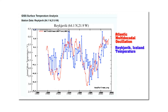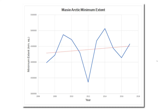The AMO may have peaked about 10 years ago and appears to be now on a downward trend. If so, we would expect the temperatures in Reykjavik would decline with it. And not surprisingly, the minimum Arctic sea ice extent has also been increasing for the last decade. As the AMO declines, Arctic sea ice extent increases.